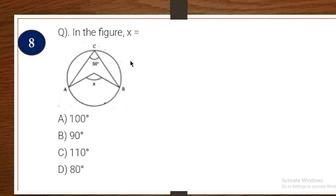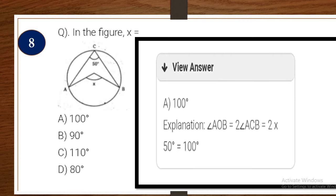Next one: in the figure, find X. Options: A: 100, B: 90, C: 110, D: 80 degrees. Explanation: angle AOB = 2 × angle ACB (central angle theorem), so AOB = 2 × 50 = 100 degrees. The right answer is A.